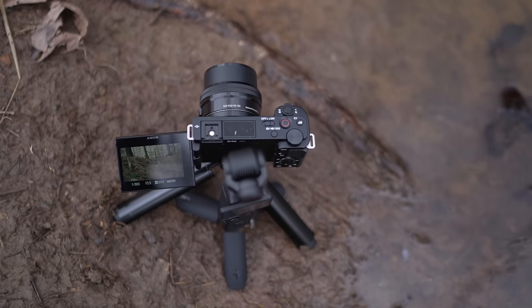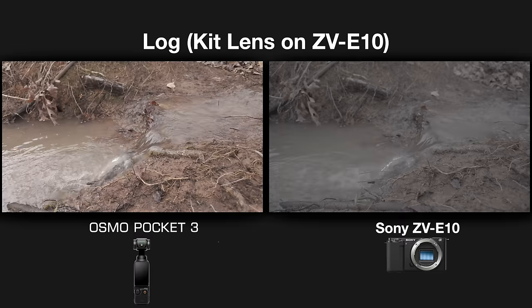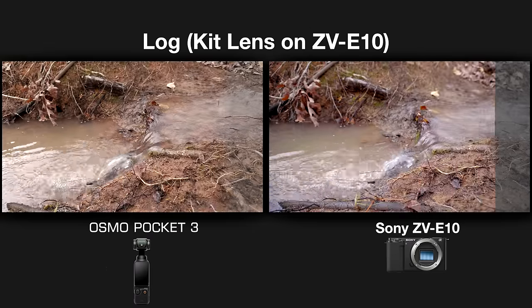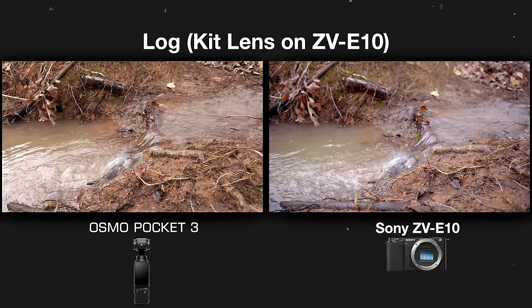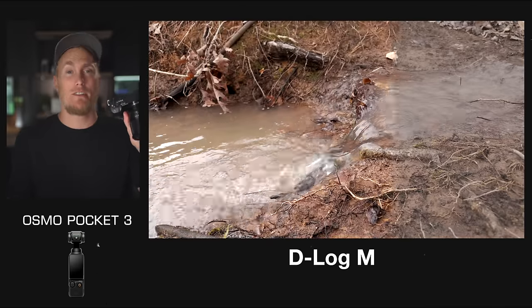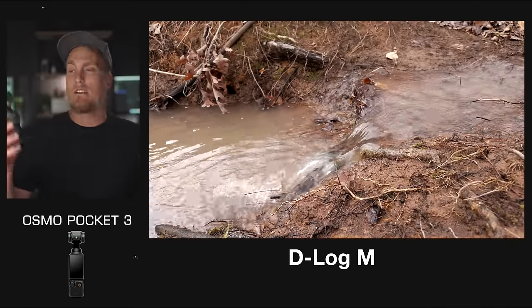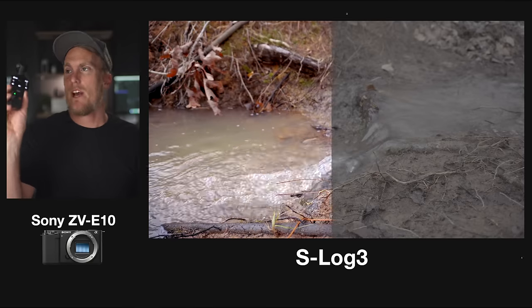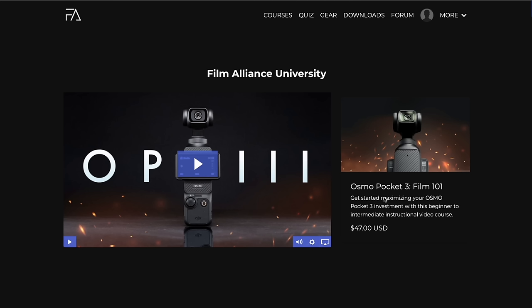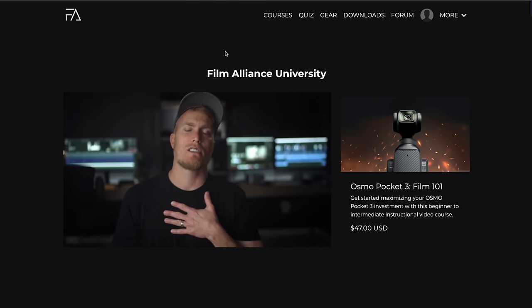The Pocket 3's D-Log M is one of the easiest log footage profiles I've ever graded or shot with. It's not as flat as Sony's S-Log 3 or Fuji's F-Log, but it's a great way for anyone to get their hands dirty with log. I don't think people should jump right into S-Log 3 for an entire client shoot — you will struggle in post and probably freak out. I would absolutely go out and shoot in D-Log M with the Pocket 3 for a client shoot because it's just that easy to grade. I do caution you to practice first — I made an entire course module on D-Log covering how to shoot and color grade it.